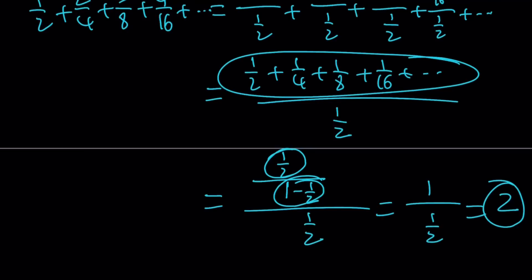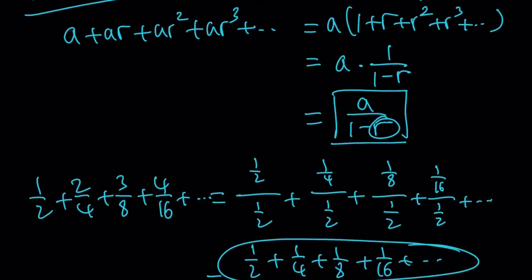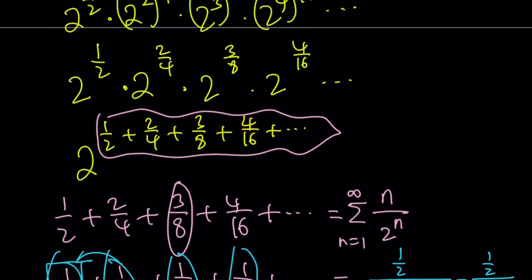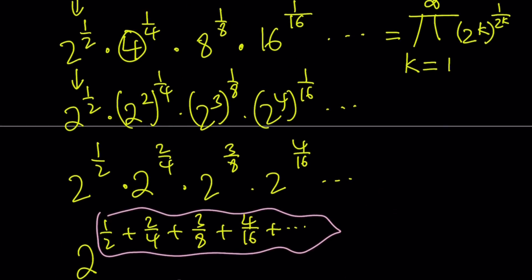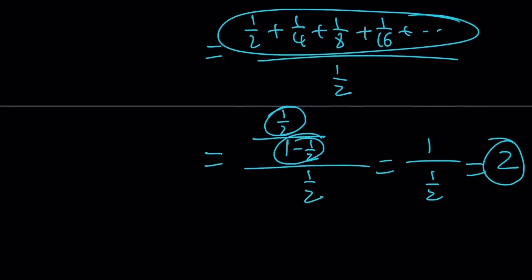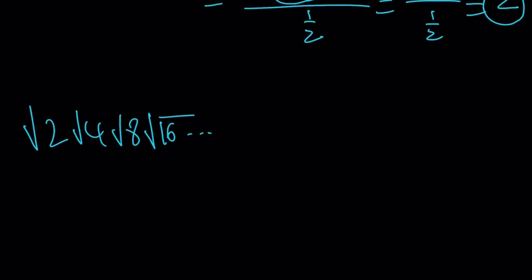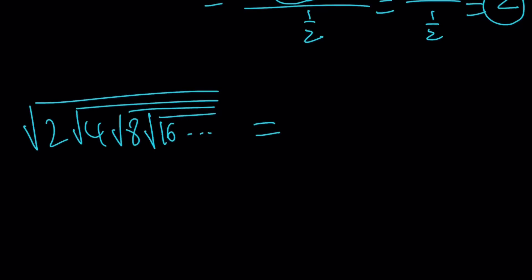The numerator (1/2 + 1/4 + 1/8 + 1/16 + ...) is itself a geometric series with first term 1/2 and ratio 1/2, giving A divided by 1 minus 1/2, which is 1/2 divided by 1/2 — that's 1. So the whole expression is 1 divided by 1/2, which equals 2. But that is just the exponent. So we have 2 to the power of 2, which equals 4. The original expression equals 2 to the power of 2, which can be written as 4.